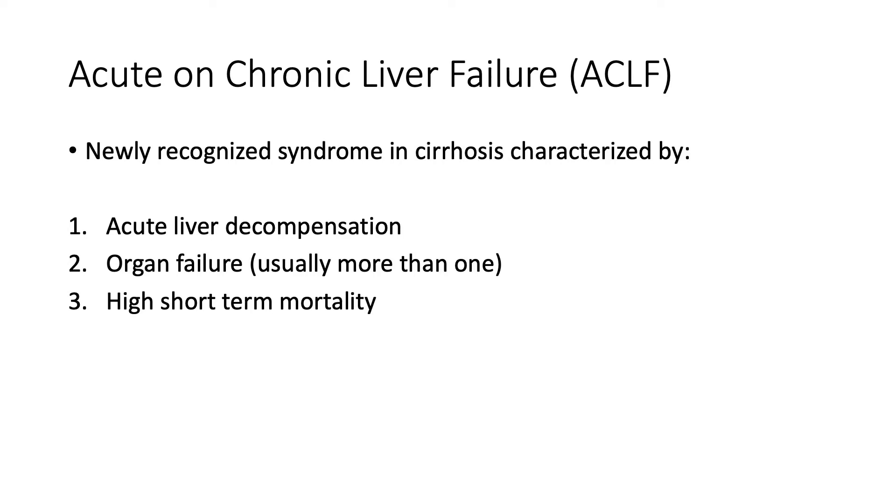There can be many different possible precipitants of acute decompensation. Infection is very common. In acute on chronic liver failure, about 40% of patients will have an infectious precipitant, and similar for acute decompensation. Sometimes bacterial translocation, bacteraemia, or dysbiosis could have an impact on decompensation even when there's not an overt infection.